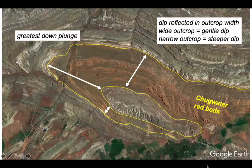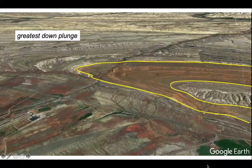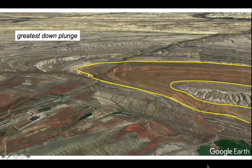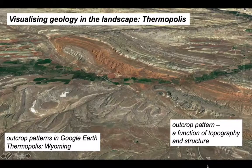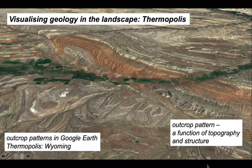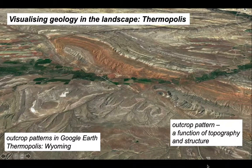The greatest outcrop width lies down the plunge of the fold. Looking side on at the fold, it's plunging off to our left as the anticline dives underground in that direction — so the Chugwater red beds go into the subsurface further to the left. Outcrop width is controlled by the dip of the beds. This has been a quick tour of the landscape around Thermopolis — a really great area for exploring relationships between outcrop patterns, structure, and topography. The Google Earth application allows you to twist the image to get side-on views, appreciating dip magnitudes and directions to build up a 3D understanding of rock structure and how geology projects into the subsurface.